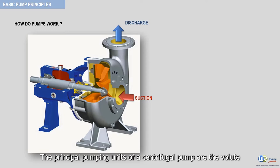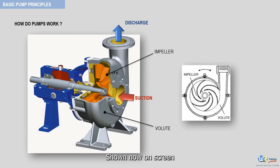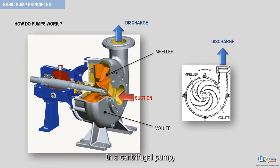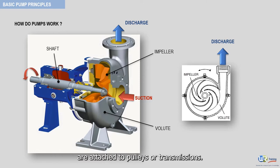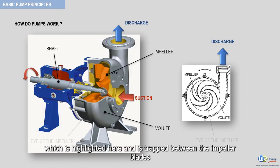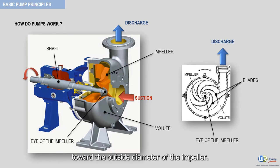The principal pumping units of a centrifugal pump are the volute and the impeller. Shown now on screen is the front view of the volute-impeller assembly with the discharge nozzle. In a centrifugal pump, the impeller is attached to a shaft. The shaft spins and is powered by an electric motor or driver — we use the term driver because some centrifugal pumps are attached to pulleys or transmissions. The fluid enters into the eye of the impeller, highlighted here, and is trapped between the impeller blades, which impart speed to it as the liquid passes from the impeller eye toward the outside diameter of the impeller.